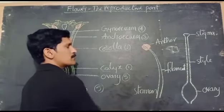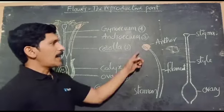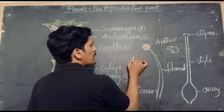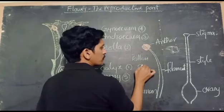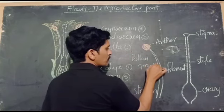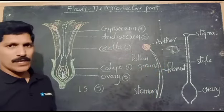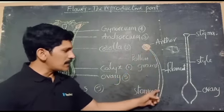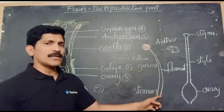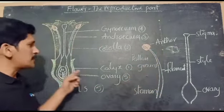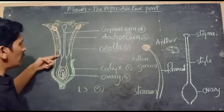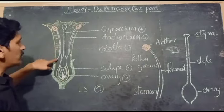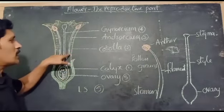The anther is the part which produces male gametes — those male gametes are called pollen grains. The second part is the filament. This filament structure helps the anther to attach in the flower itself, and these structures are attached to the corolla.